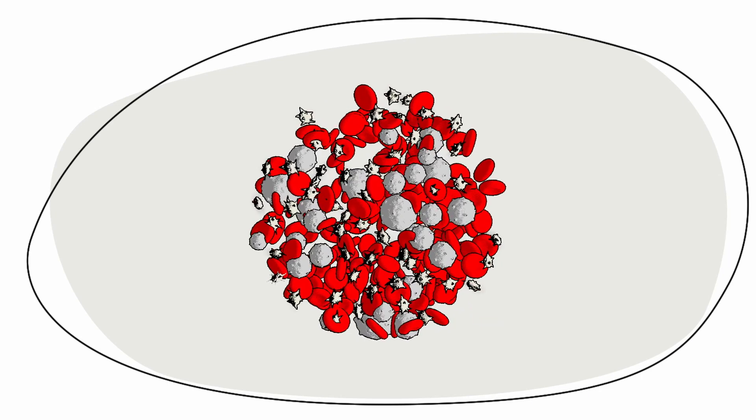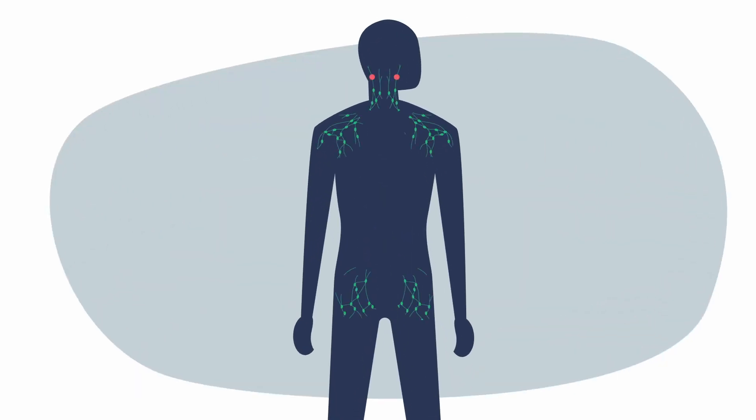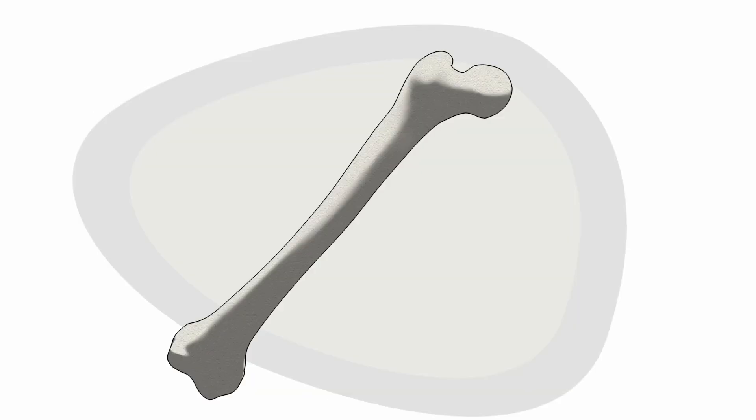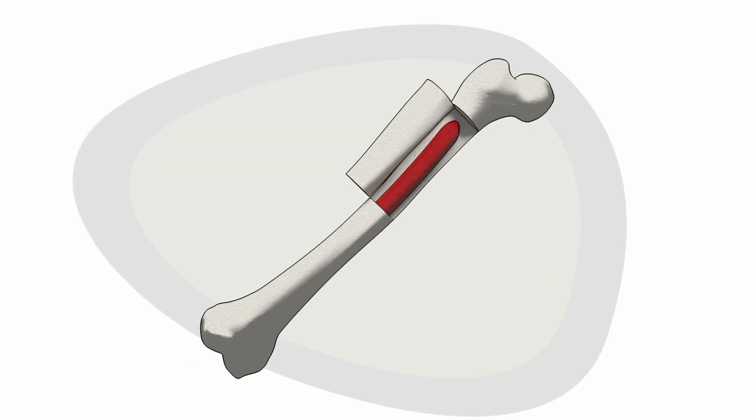DLBCL develops in the lymphatic system, which is part of your immune system. It includes your lymph nodes, thymus, liver, spleen, and bone marrow. Bone marrow is the soft inner part of the bone where stem and three main types of blood cells are formed.